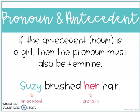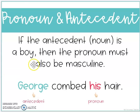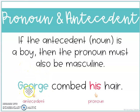If your antecedent is a girl, then your pronoun must also be feminine. Feminine means girls. So Susie brushed her hair. And of course, if your antecedent is a boy, then your pronoun must also be masculine. Masculine means boy. George is a boy — comb his hair.